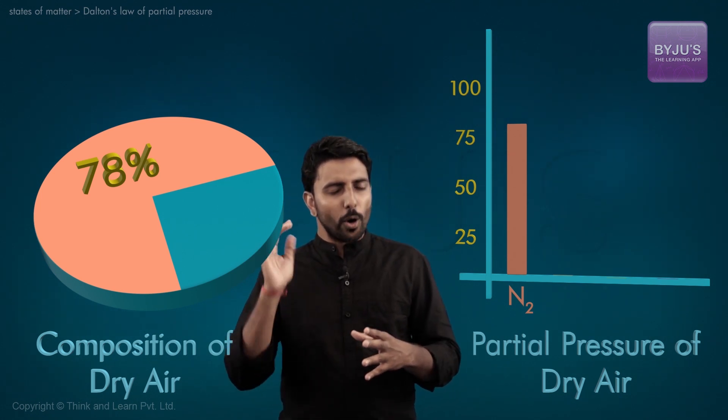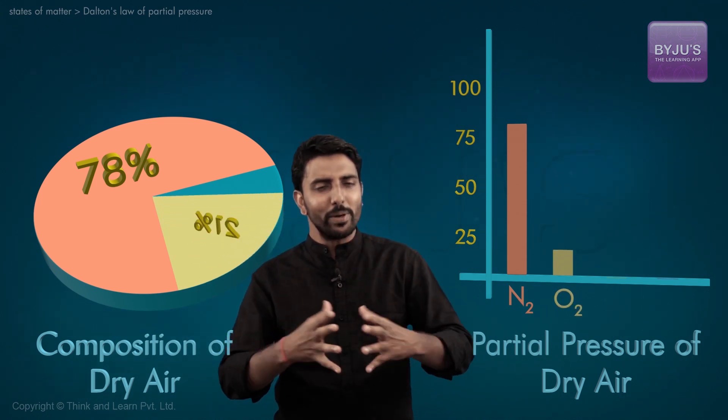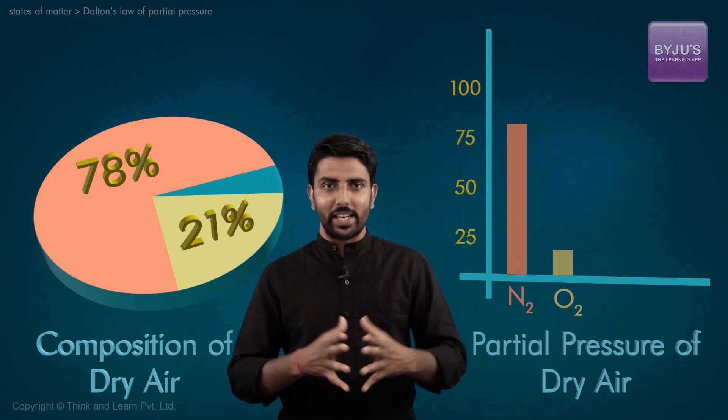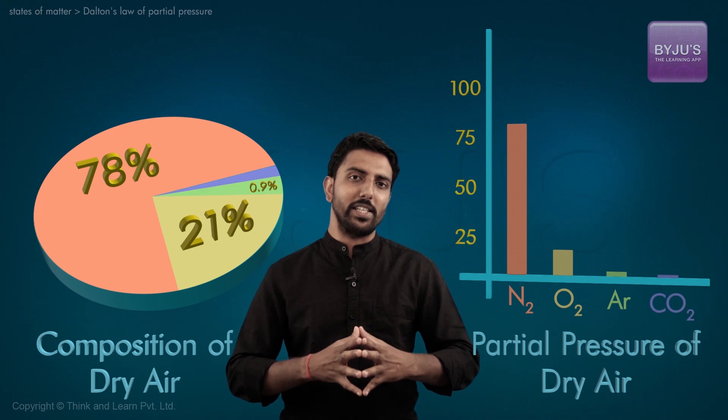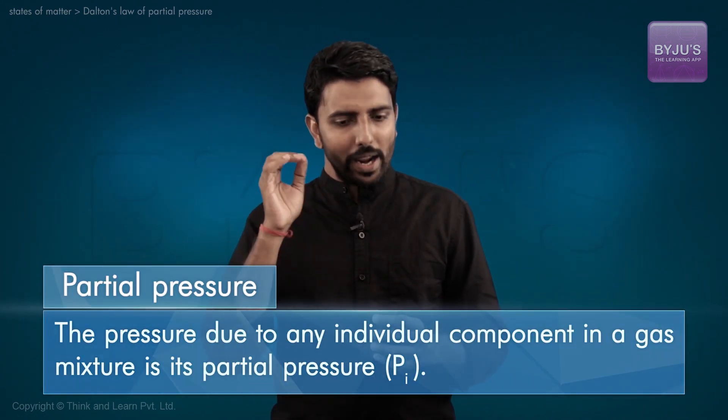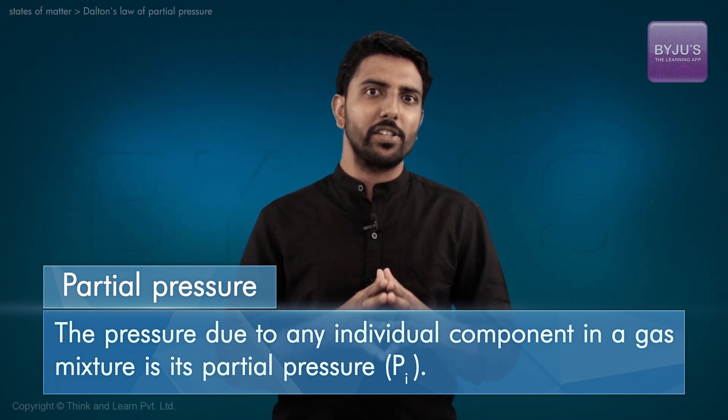Likewise, the oxygen molecules in the air sample exactly exert a pressure of 21% of the total pressure, which is again very specific and completely independent of the other gases present. We define the pressure due to any individual component in a gas mixture as its partial pressure, Pi.